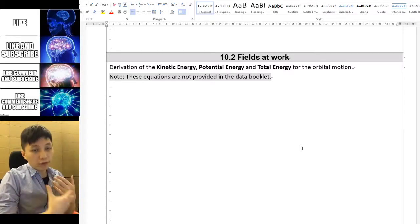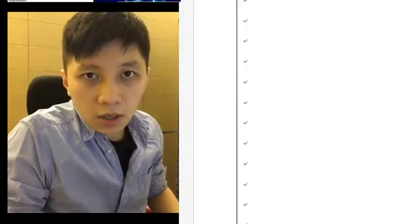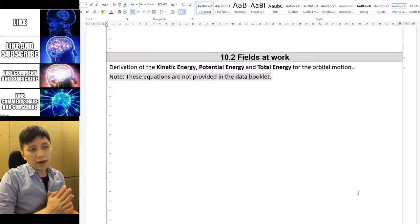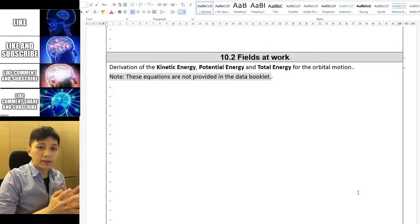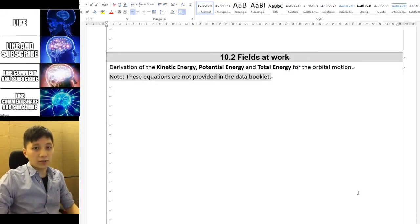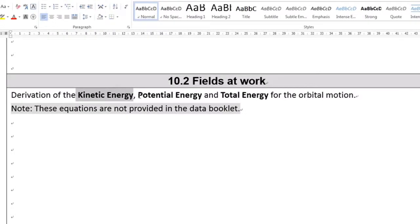So we'll continue with gravitation in 10.2 and now we are going to do the hardest thing in chapter 10. It is called the most difficult part in chapter 10 because in the past IB physics students performed the worst in this concept. And the concept that we're going to learn is kinetic energy, potential energy, and total energy in an orbital motion.